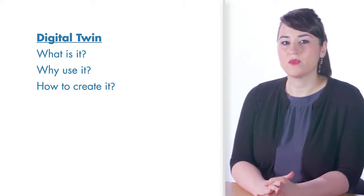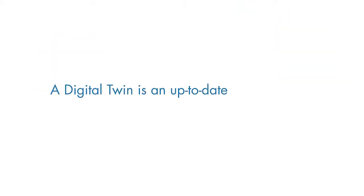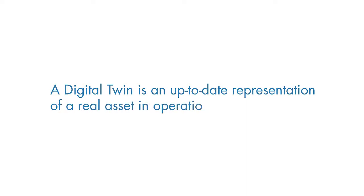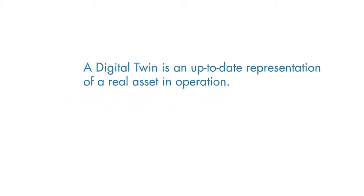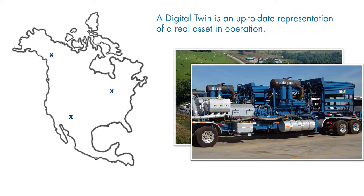Predictive maintenance is one of the key application areas of digital twins. A digital twin is defined as an up-to-date representation of a real physical asset in operation. Let's use an example to understand what this means. Assume that we have well sites at different locations where we operate multiple pumps to extract oil and gas from the ground.